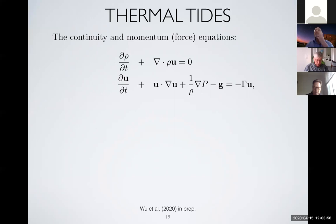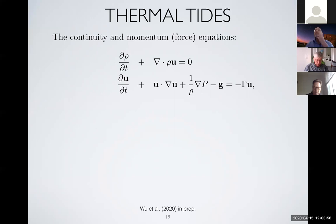I thought this was a physics as well as astronomy talk, so I'll quickly go through the normal mode physics. I kind of like this calculation because I did it myself to see if I could predict what the amplitude should be from the thermal forcing, and the answer is you get within a factor of two of the actual observed amplitude.